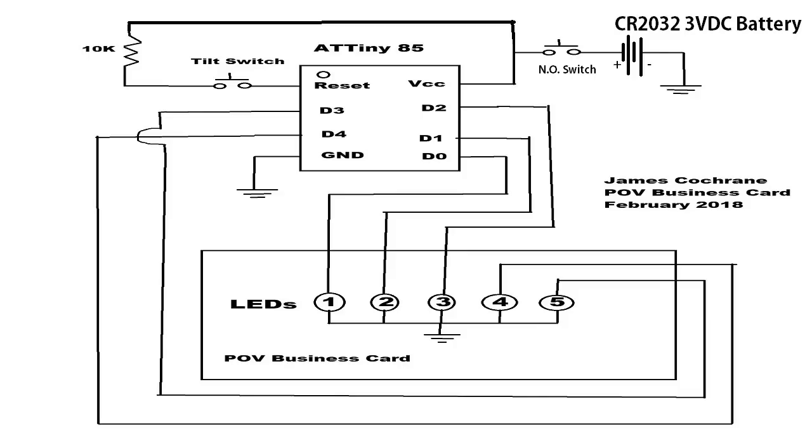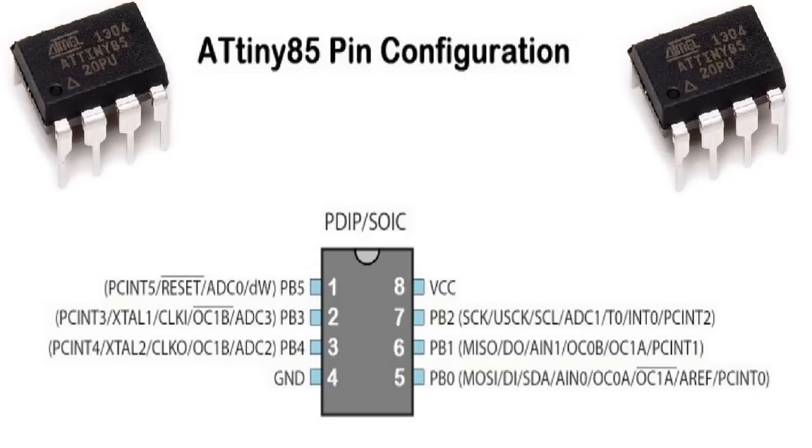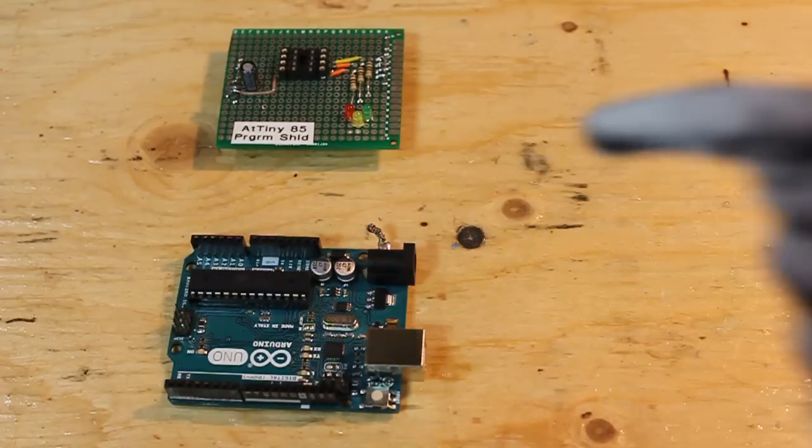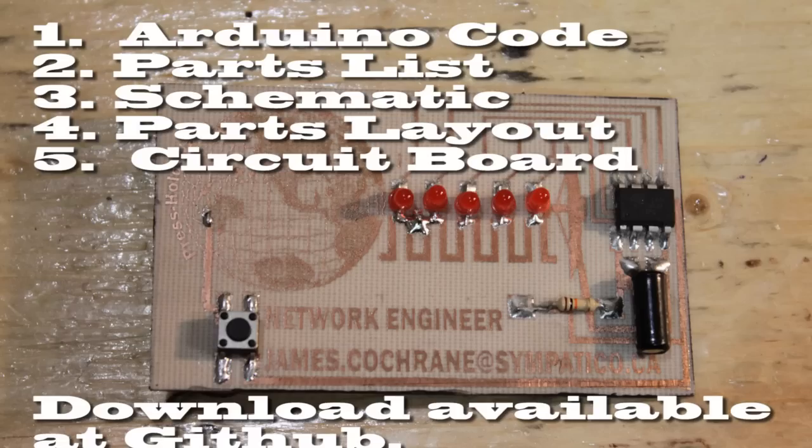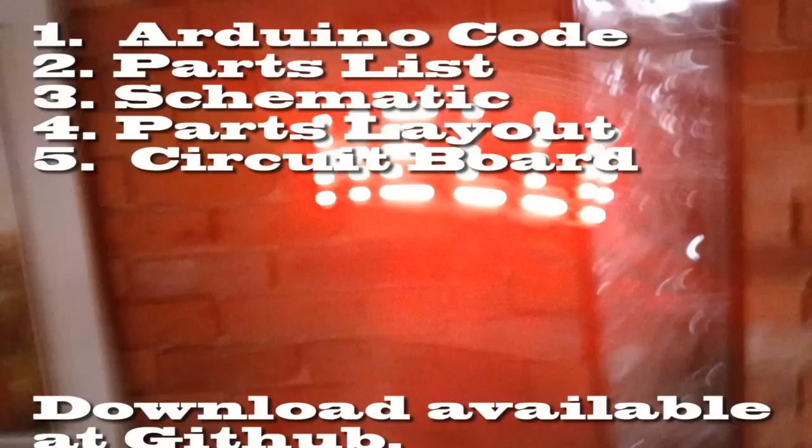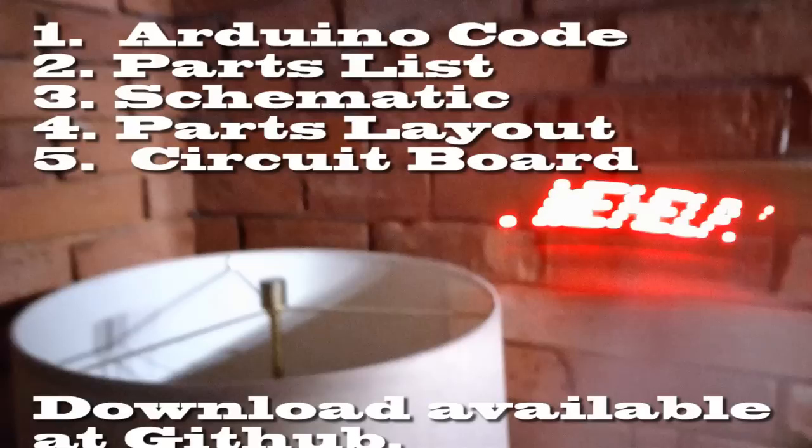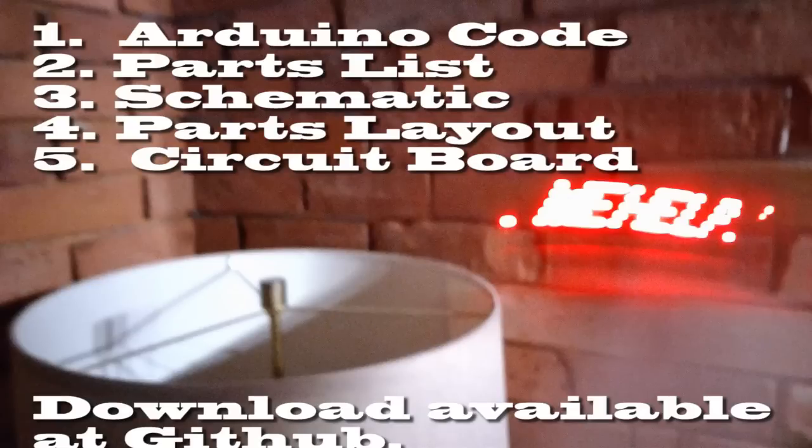Now we're looking at the schematic for the business card and it requires an ATtiny 85 microcontroller, a 10k pull-up resistor, a normally open push-button switch, a tilt switch, and five LEDs. The reason why I chose the ATtiny 85 is because it requires a less expensive Arduino Uno to program rather than the more expensive PIC kits. In this video we're going to concentrate on building the hardware. The Arduino code will be provided so you can modify it with your own messages and upload it to your microcontroller.